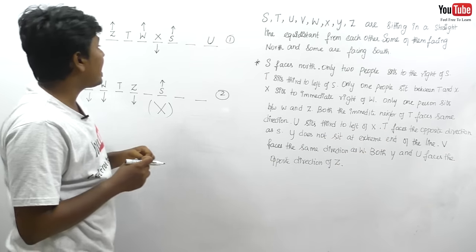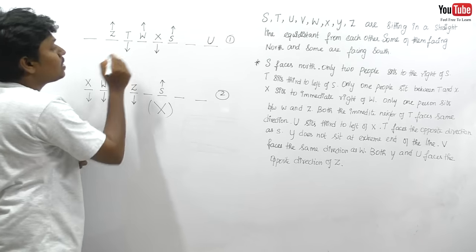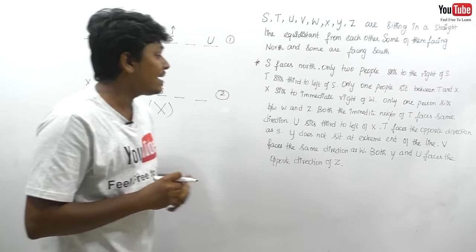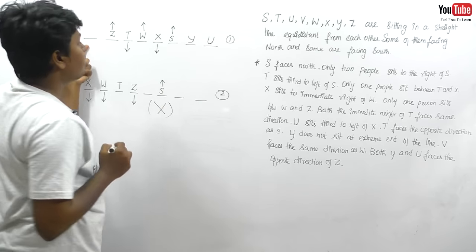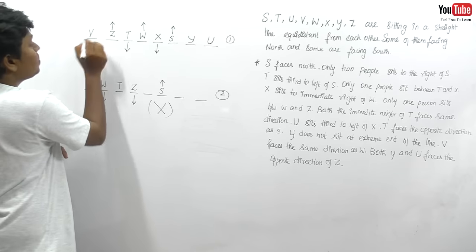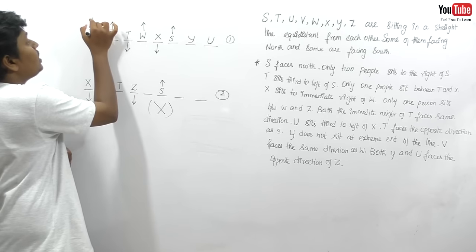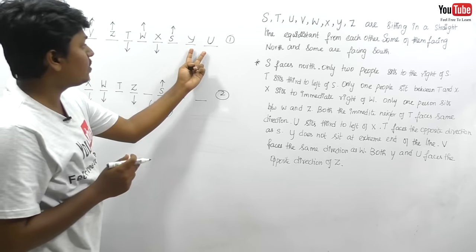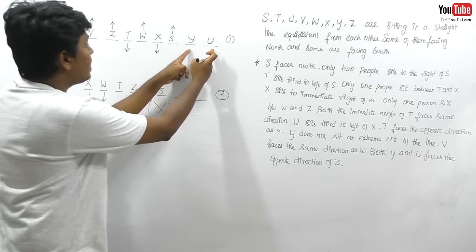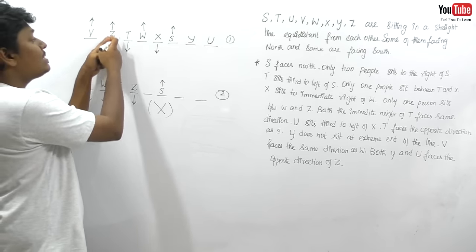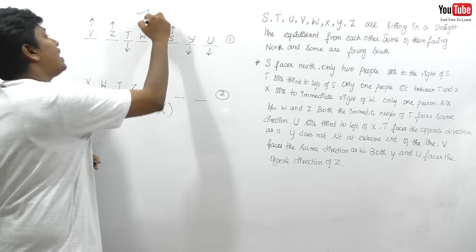T faces the opposite direction of S. S faces north, so T faces south. Y does not sit at the extreme end of the line — so Y cannot be at either end, meaning Y takes the only interior remaining position and V takes the remaining end. V faces the same direction as W — W is facing north, so V also faces north. Both Y and U face the opposite direction of Z — Z faces north, so Y and U face south.